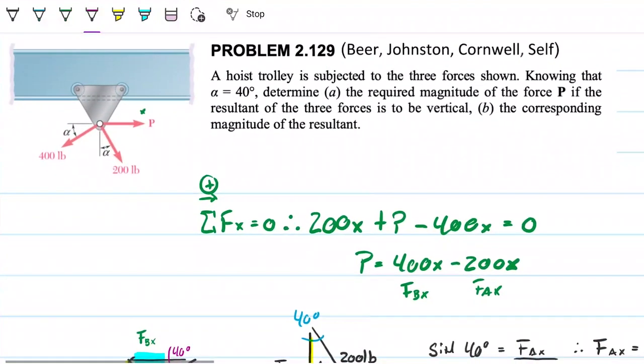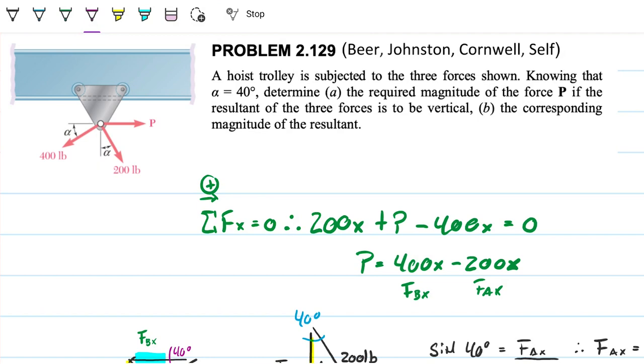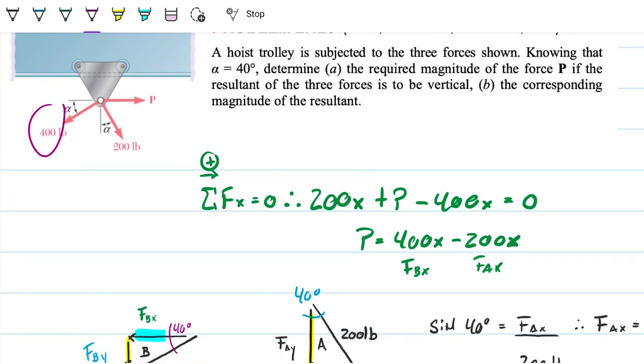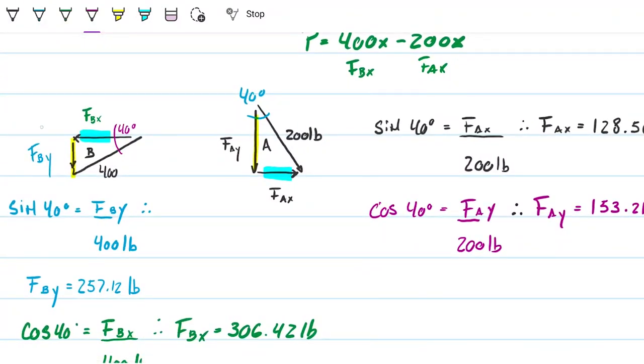So then we go into part B, which asks us, what is then the corresponding magnitude of the resultant? Because we just canceled whatever was on the horizontal direction. And therefore now we know the only things that are acting here are the components downwards. And they're both in the same direction, they're both downwards, both the 400 and 200. So they're going to help each other out, sum instead of subtract. And basically the resultant force is going to be the sum of this guy plus this guy.